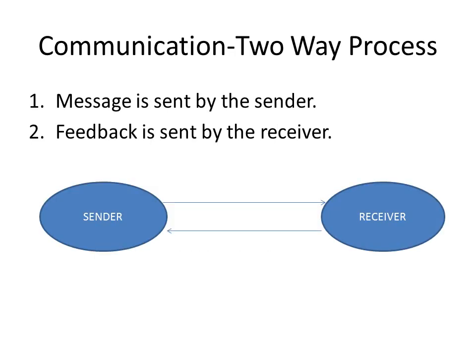The most important thing to remember is that communication is a two-way process. A minimum of two persons are required: one is the sender and the other is the receiver. The sender sends a message to the receiver, and the receiver sends feedback or a response back. For example, Ram asked Sham, 'How are you?' and Sham replied, 'I am fine.' This shows that communication is a two-way process.